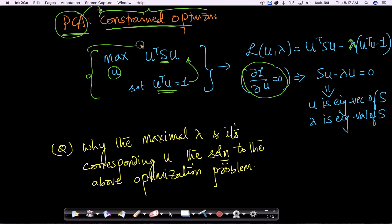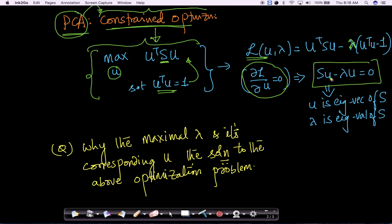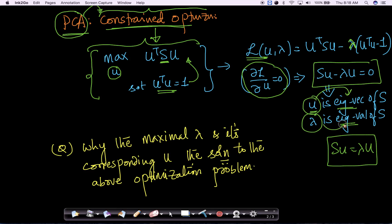This is the constrained optimization problem of PCA that we have seen, where X is the covariance matrix of your data matrix S. We reformulated this problem using Lagrangian multipliers, and when we take the derivative of L with respect to U and equate it to zero, we get SU = λU. Any U and λ satisfying this property are the eigenvectors and eigenvalues of S.